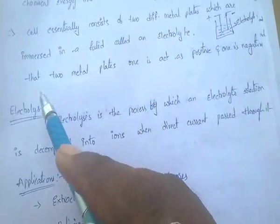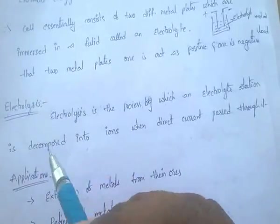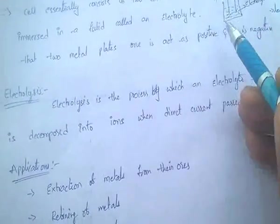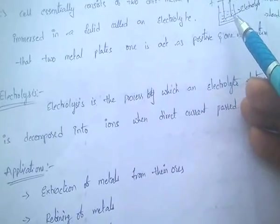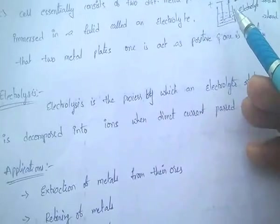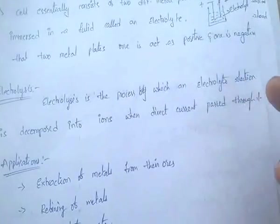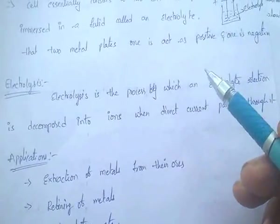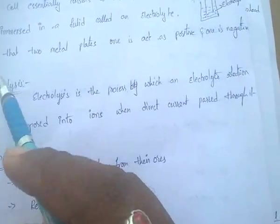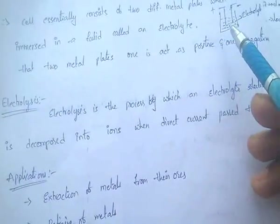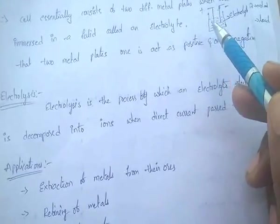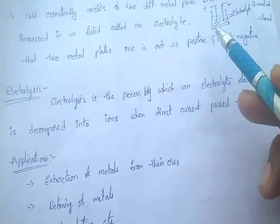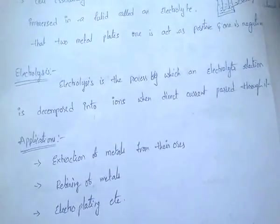What is the process of electrolysis? Electrolysis is the process by which an electrolyte solution is decomposed into ions when direct current is passed through it. Simply put, whenever a DC current flows through the electrolyte, the electrolyte solution is decomposed into ions. This process is called electrolysis.